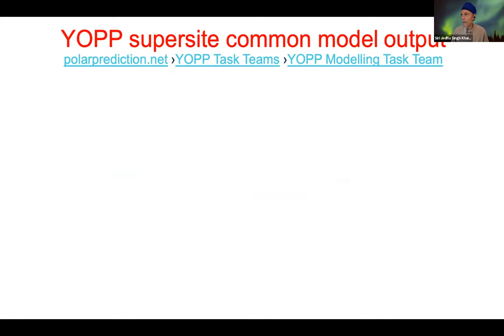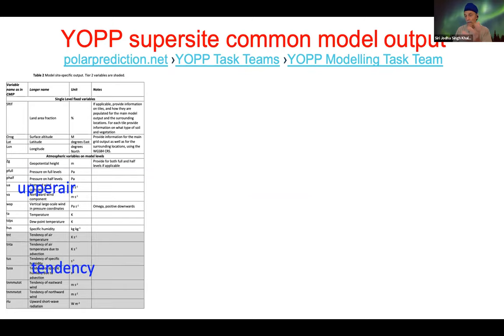Here is an example of the model output. We have tables specifying variables labeled with the variable name as in CMIP and a long name — a more descriptive identifier. This table was what the OPSITE effort began with, specifically for model outputs.